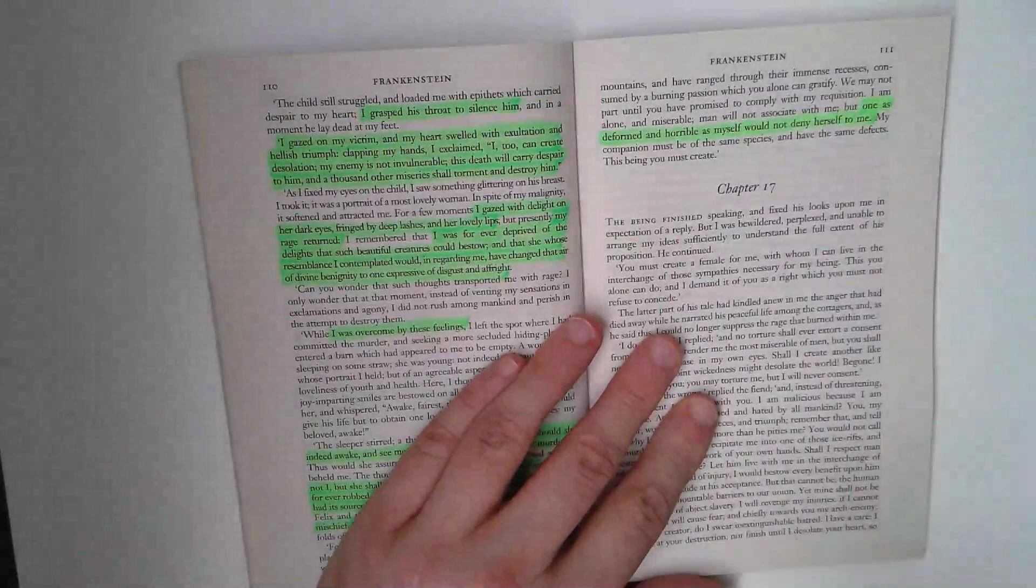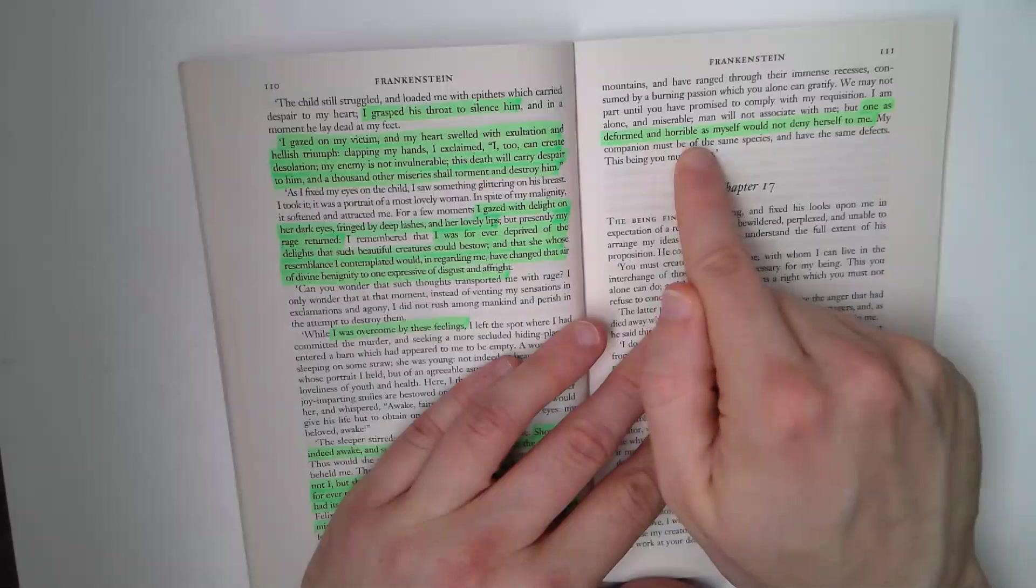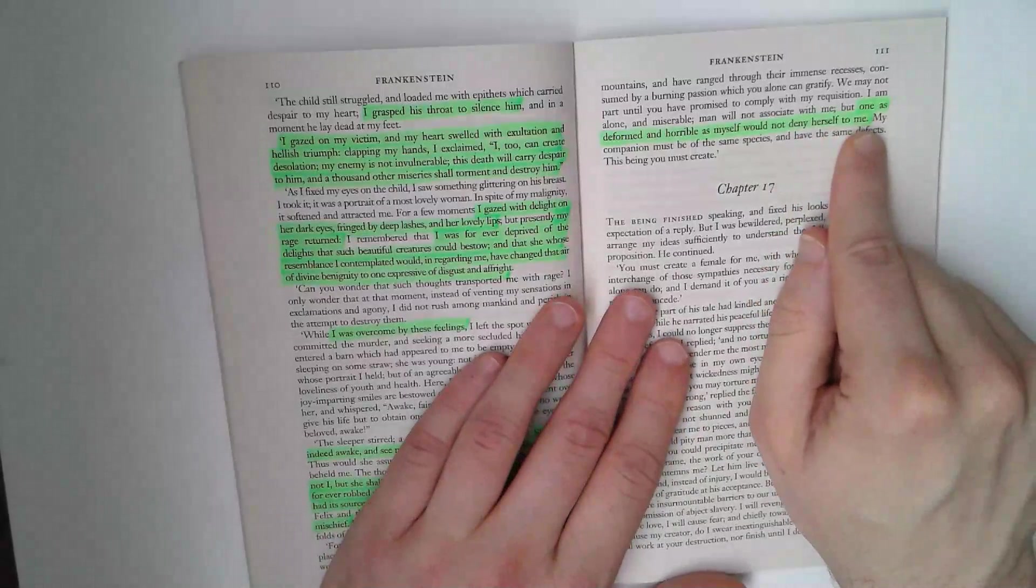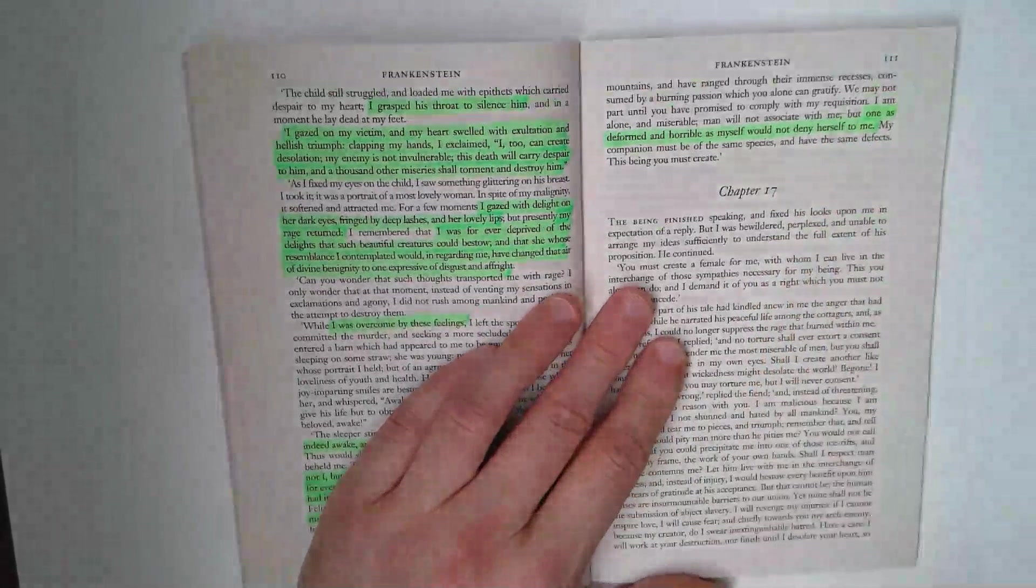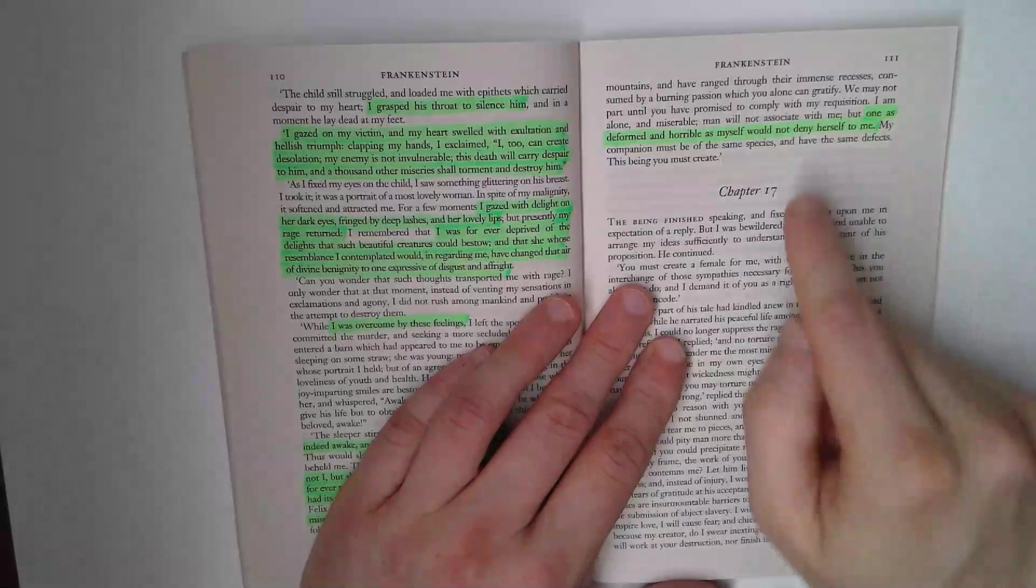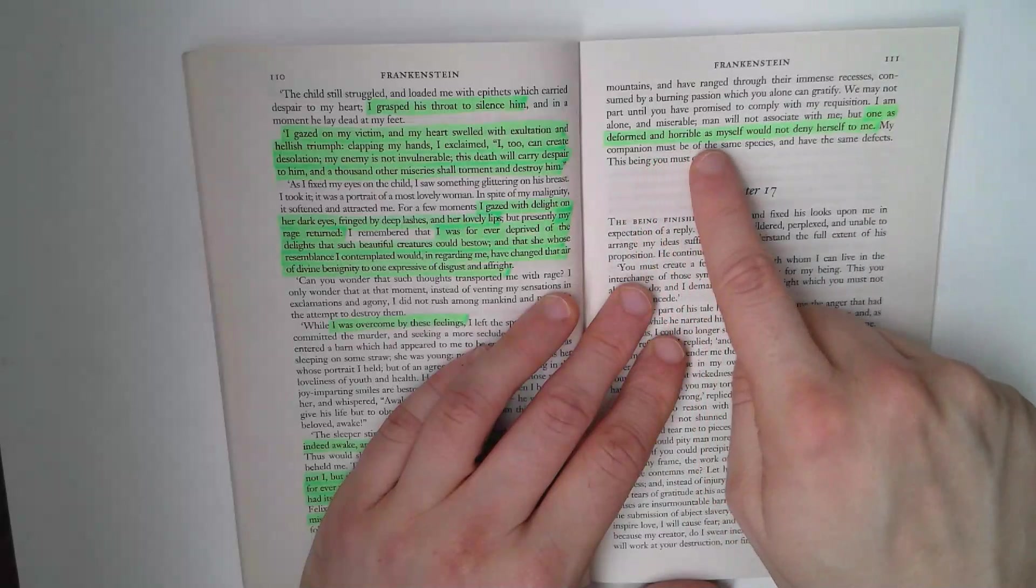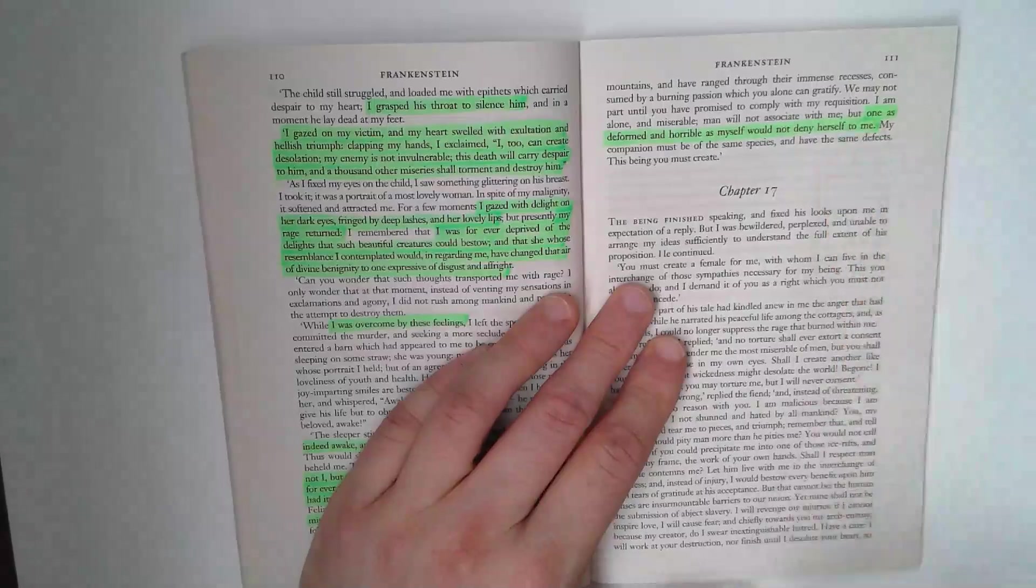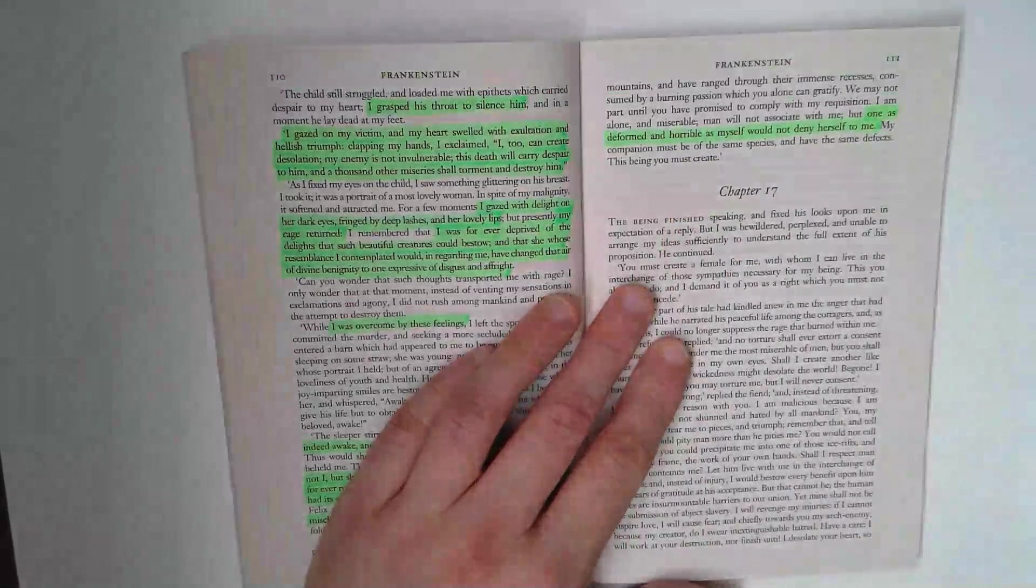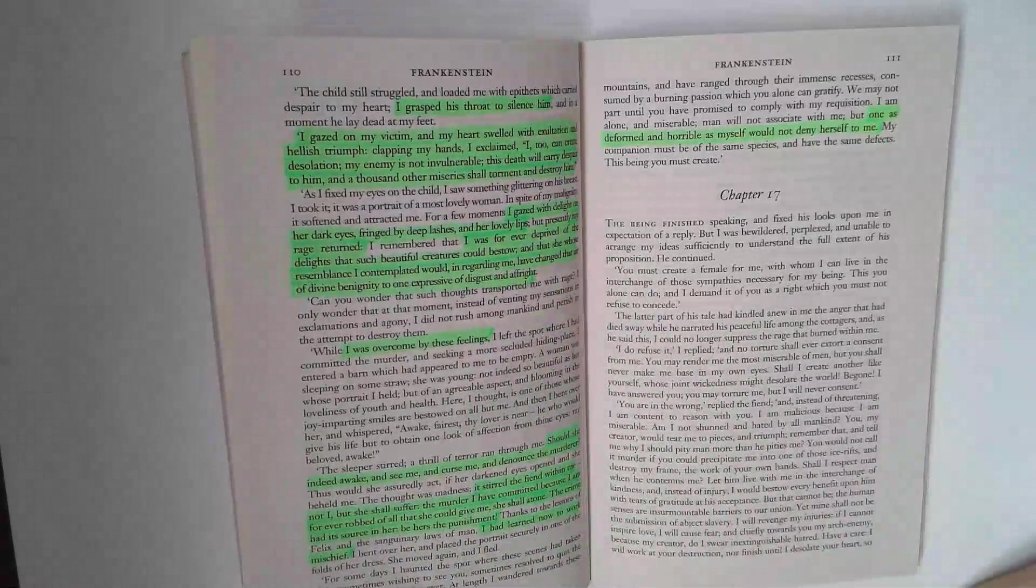And he demands at the end of chapter 16 that Victor create one as deformed and horrible as myself, would not deny herself to me. And that in itself is quite an interesting point because there's no way of knowing this. And we'll consider this in a bit more detail when we see Victor's line of thought, or Shelley presents Victor's line of thought in regards to creating the female creature. But if all mankind has rejected the creature, why wouldn't someone as horrible as the creature reject him as well? It's a fascinating point. But chapter 16 ends with this being you must create, the creature's final demand to Victor. And then finally, they discuss this narrative, which we'll see in chapter 17.